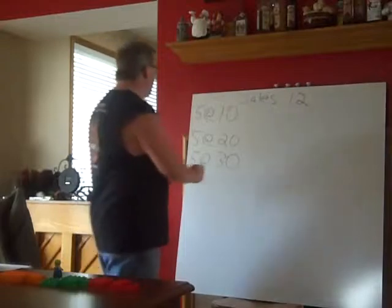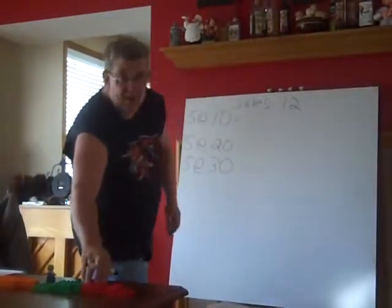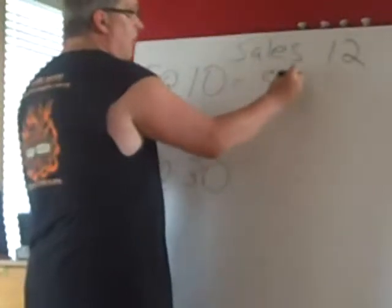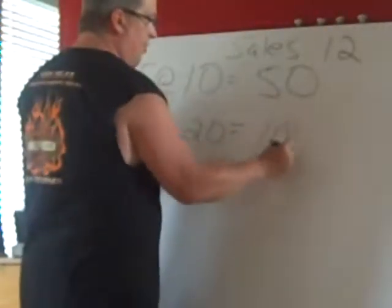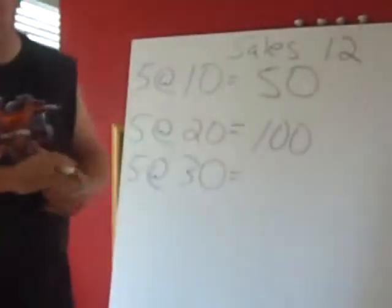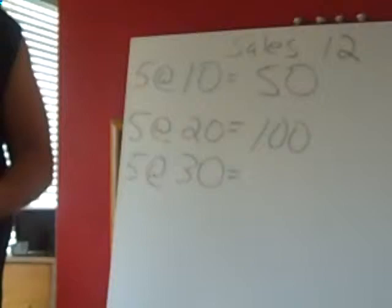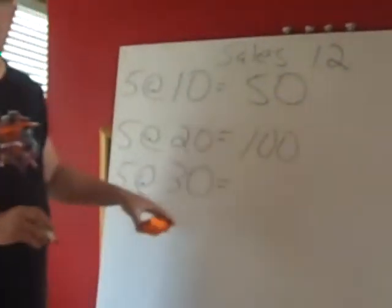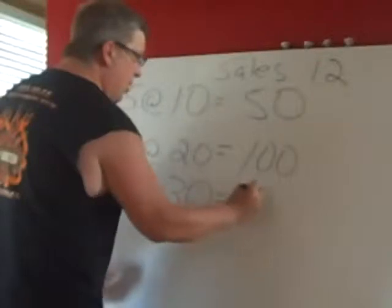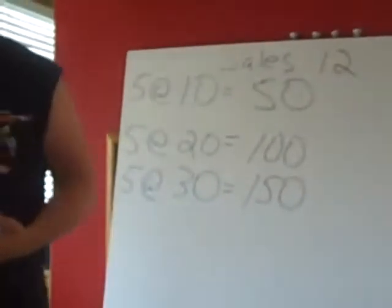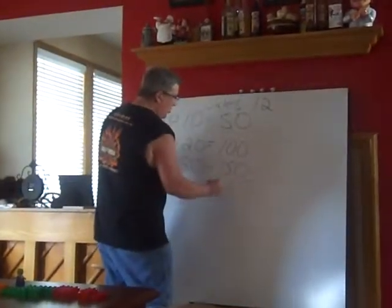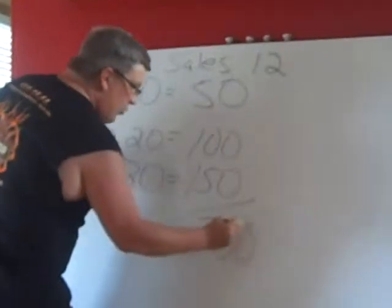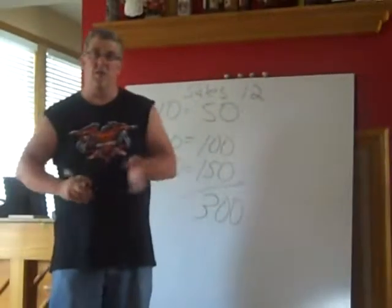First, we need to figure out what our total cost is. We have five red ones at $10 a piece, so those five have a total cost of $50. Our green ones are $20 a piece, so we have a total cost for our green items of $100. And finally, our orange product is priced at $30 a piece, giving a total of $150. So our total cost is $300, and we call that the total cost of goods available for sale.